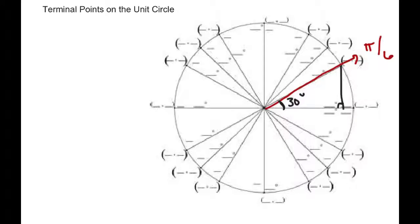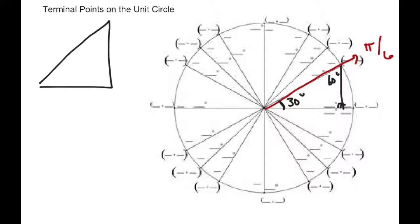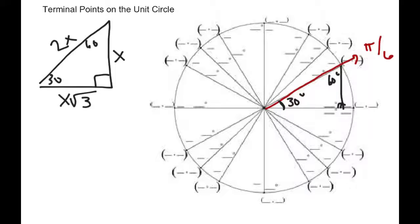If I draw a line down to the x-axis, I get a nice right angle. This angle is 30 degrees, or pi over 6. If that's 30 degrees and this is 90 degrees over here, then this must be 60. In geometry, when we studied 30-60-90 triangles, we found that their side lengths were x across from 30 degrees, x times the square root of 3 across from 60, and 2x across from the right angle. But in the unit circle, x is 1, so this is just 1, square root of 3, and 2.